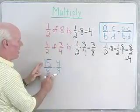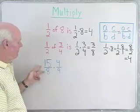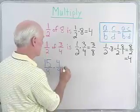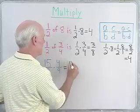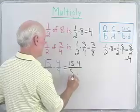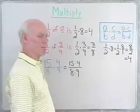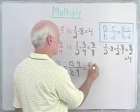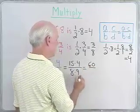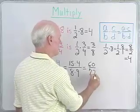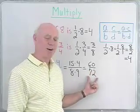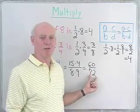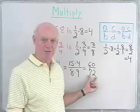How about 15 over 8 times 4 over 9? If I use my rule for multiplying fractions, I'm going to write this as 15 times 4 divided by 8 times 9. If I multiply in the numerator, 4 times 15 is 60, and 8 times 9 is 72. But now I have 60 over 72, and I'm going to need to reduce to lowest terms by factoring the numerator and denominator and dividing out any common factors.